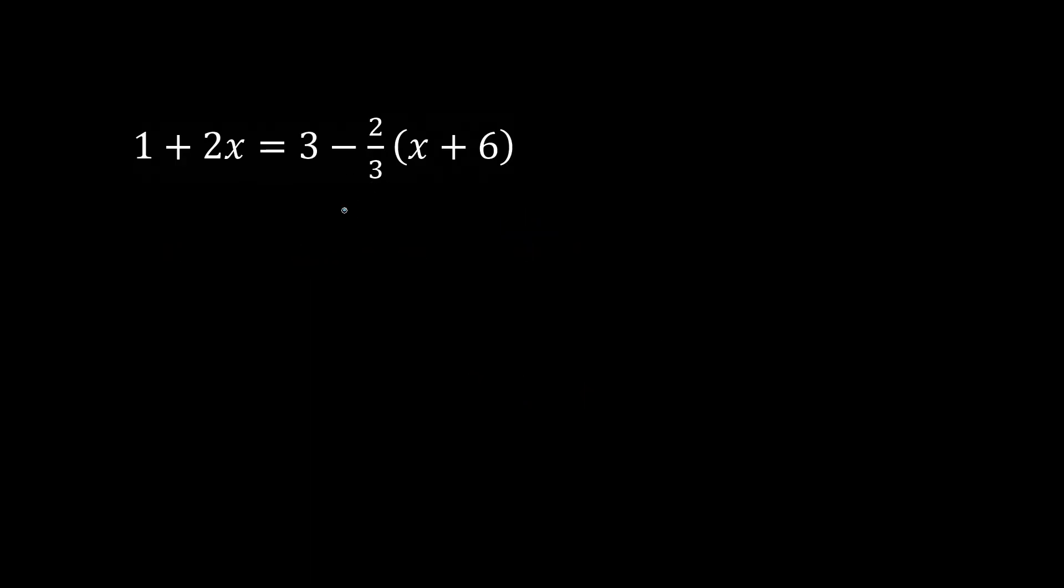Again, we have an equation with a denominator. This time we have 3. So let's multiply both sides by 3. We have 3 plus 6x equals 9, and when we multiply this part by 3, we just get negative 2.